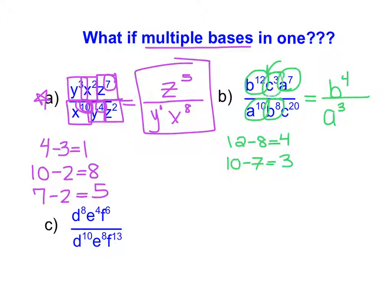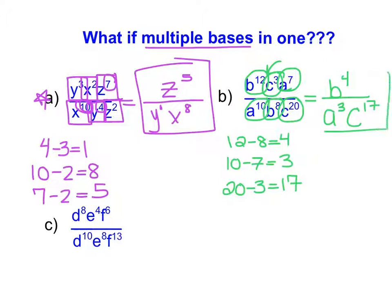Lastly, I have c to the power of 3 and c to the power of 20. 20 minus 3 leaves us with 17 c's, so we have c to the power of 17, and because the 20 is bigger and in the denominator, the c to the power of 17 is left in the denominator.